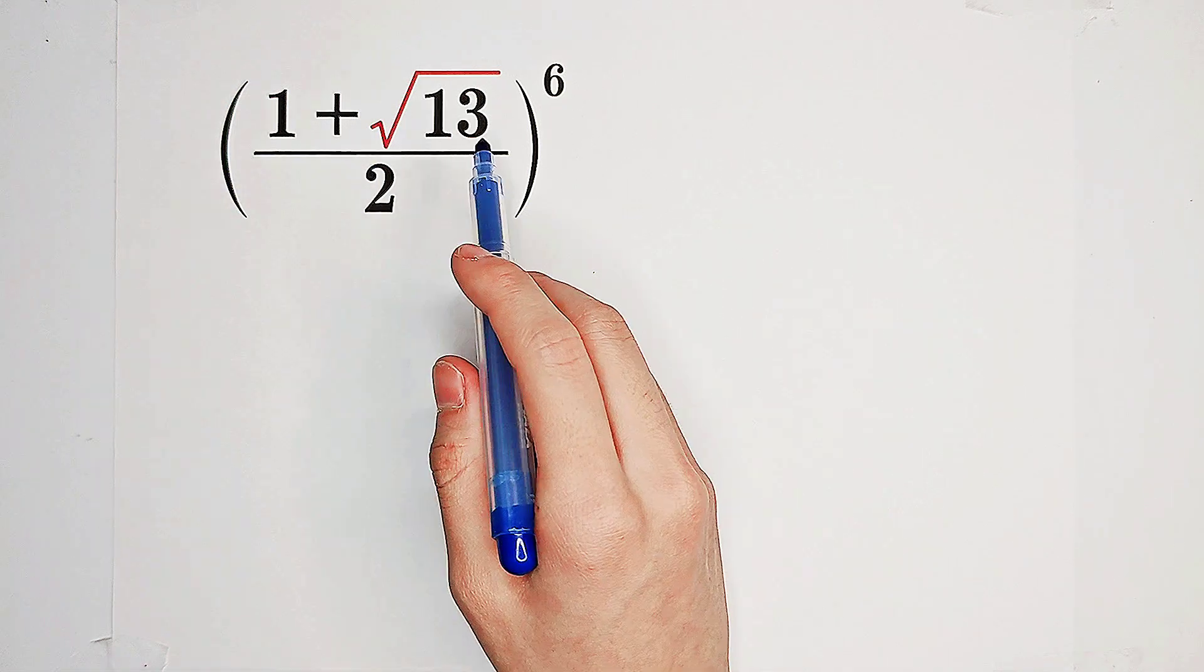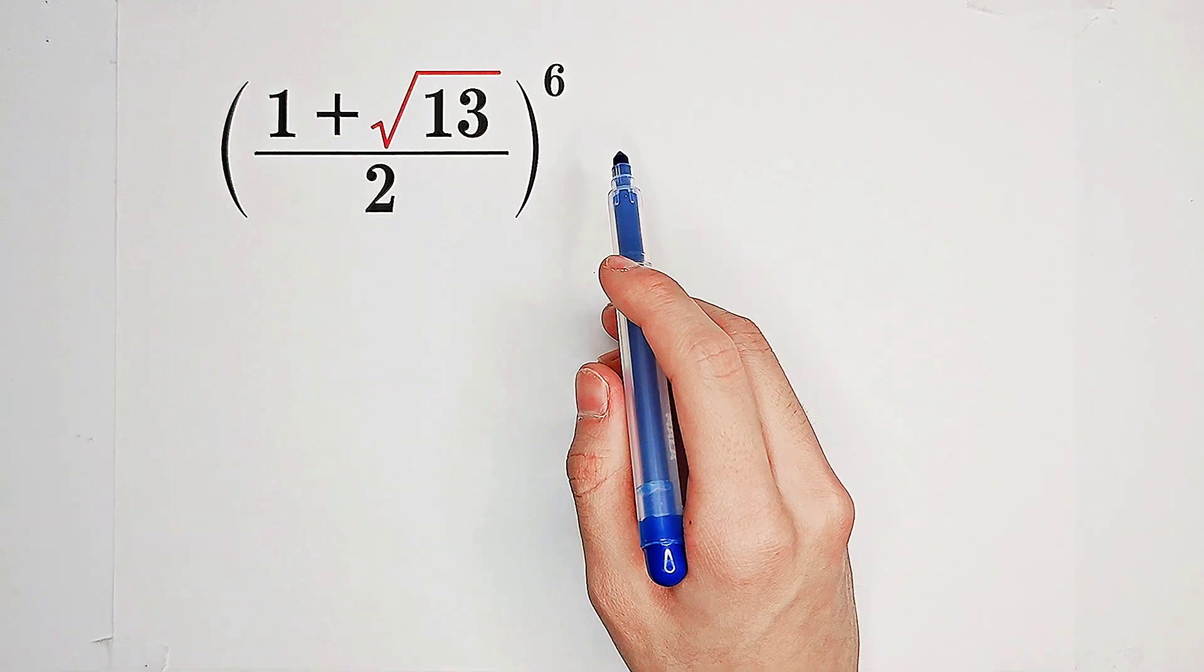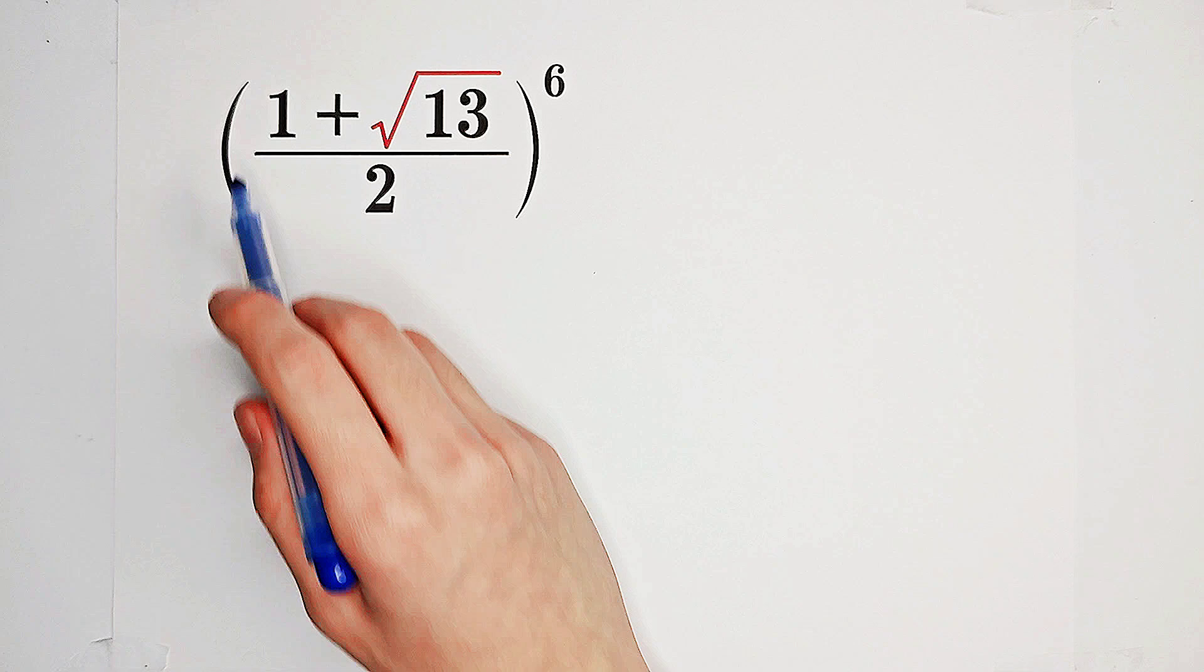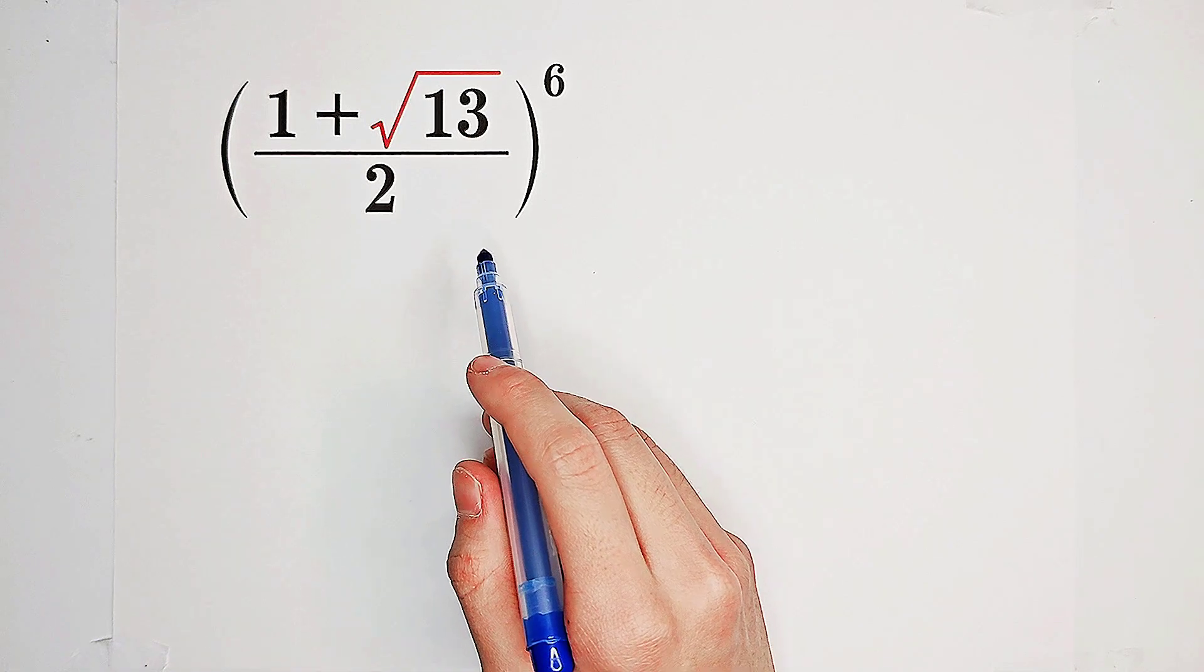Calculate 1 plus square root of 13 over 2 all to the power of 6. Look, the base is too complicated.